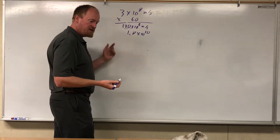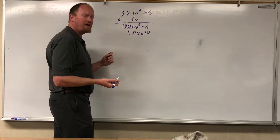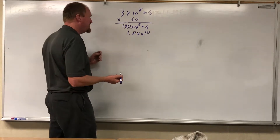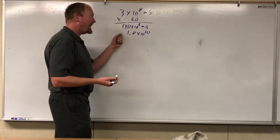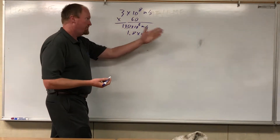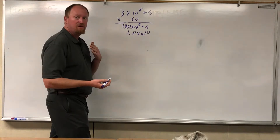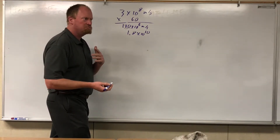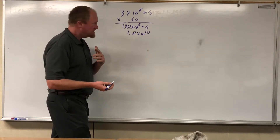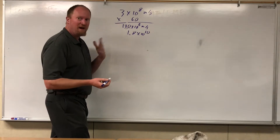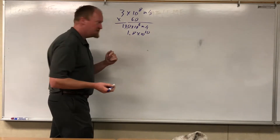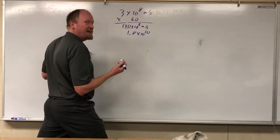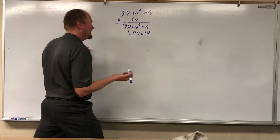A light minute is not quite from the sun to the planet Mercury, but if you've got eight light minutes, you can go from the sun to the earth, or from the earth to the sun — that would be about eight light minutes. So one AU is about eight light minutes.